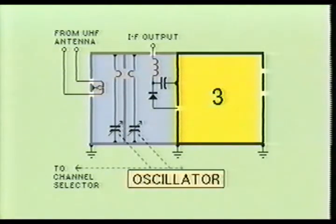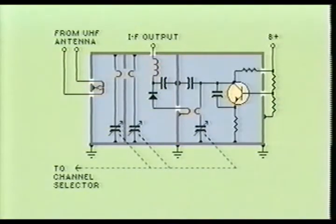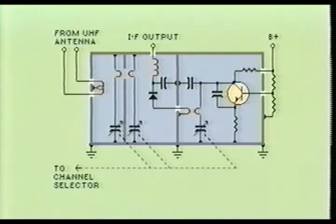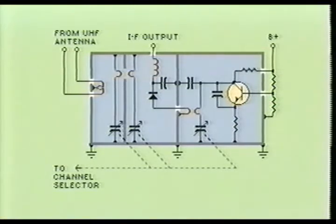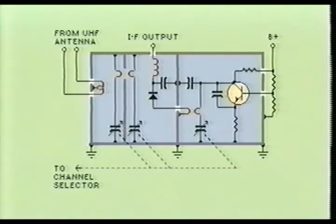The third compartment contains the UHF oscillator circuitry, basically a modified form of the Colpitts oscillator configuration called the ultra-audion. This circuit uses the silicon epitaxial planar transistor as the primary active component. This stage also contains a trimmer capacitor used to adjust the oscillator frequency for channel selection. Notice the electromagnetic coupling between the oscillator stage and the mixer diode. The capacitors mounted on the metal enclosure are used to reduce unwanted AC frequencies.